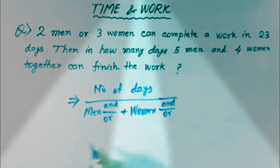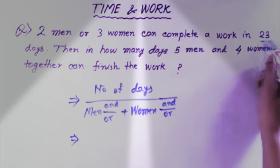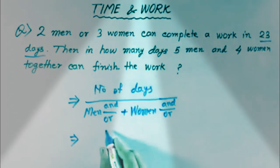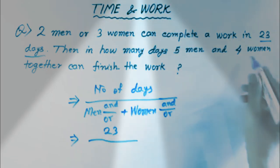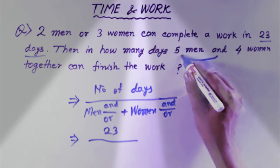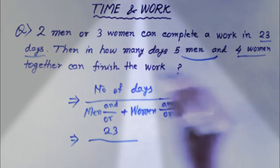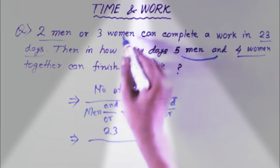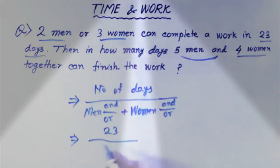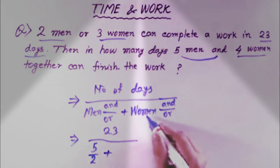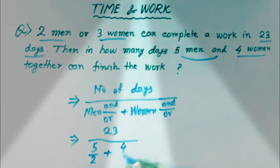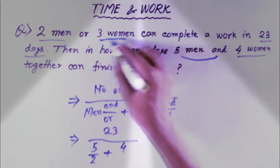The number of days is 23 days total. For two men or three women, we take the ratio. Five men and four women - we write five men on top and three women on the bottom, then four women.